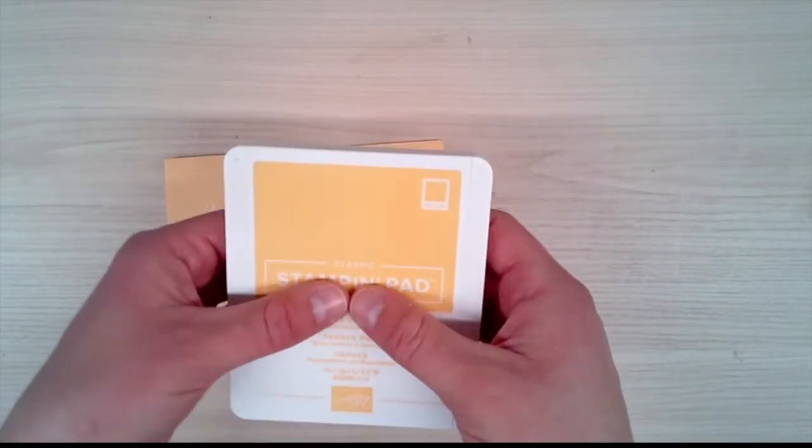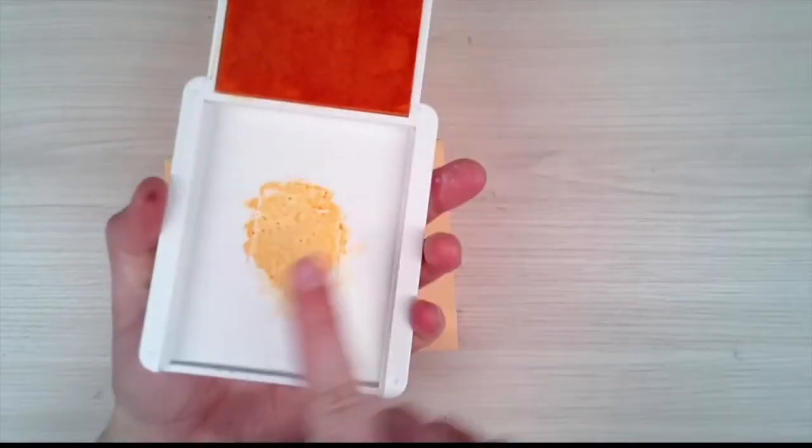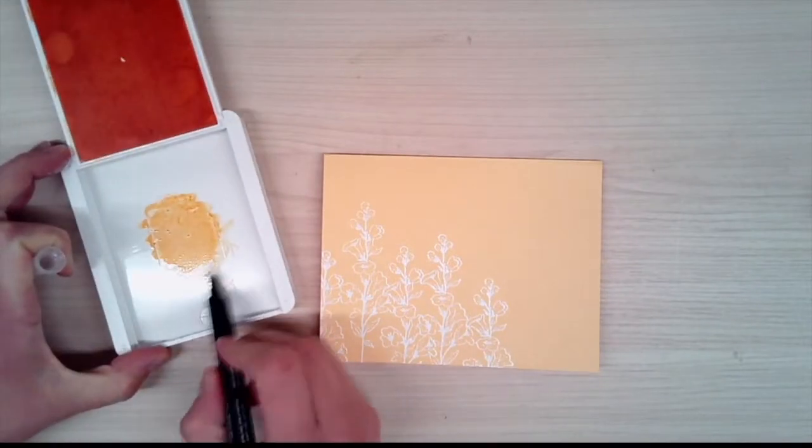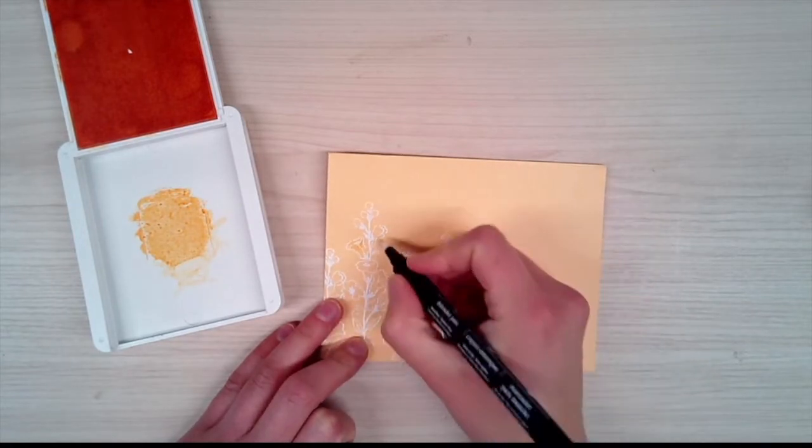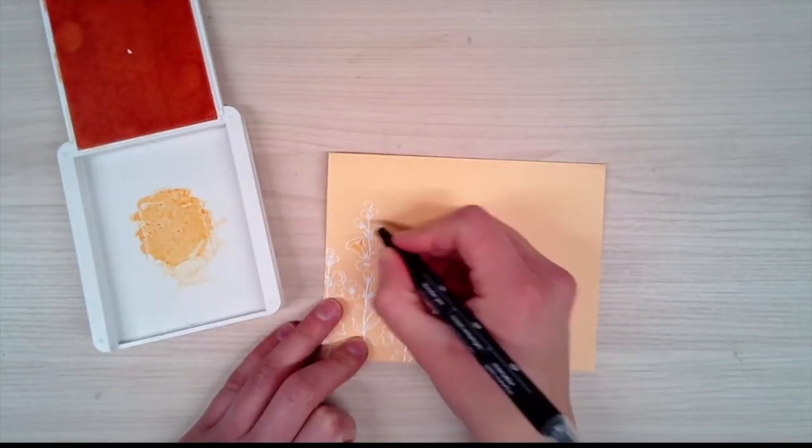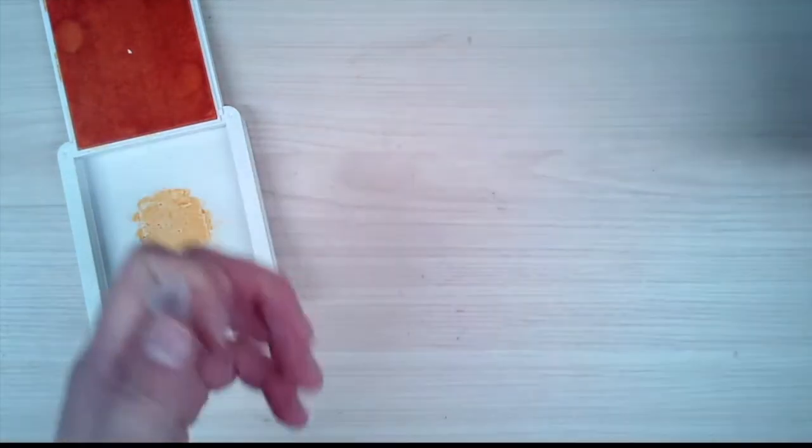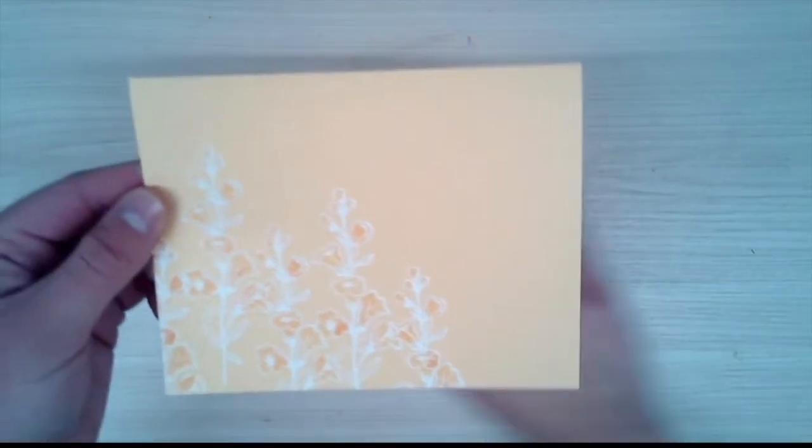Next, I took the pale papaya ink and pushed down in the lid to get some extra ink. I took a blender pen and I'm just going to take some of the ink and go over the flowers to add a little extra accent on all the flowers and buds. That just makes those white embossed flowers pop even more.